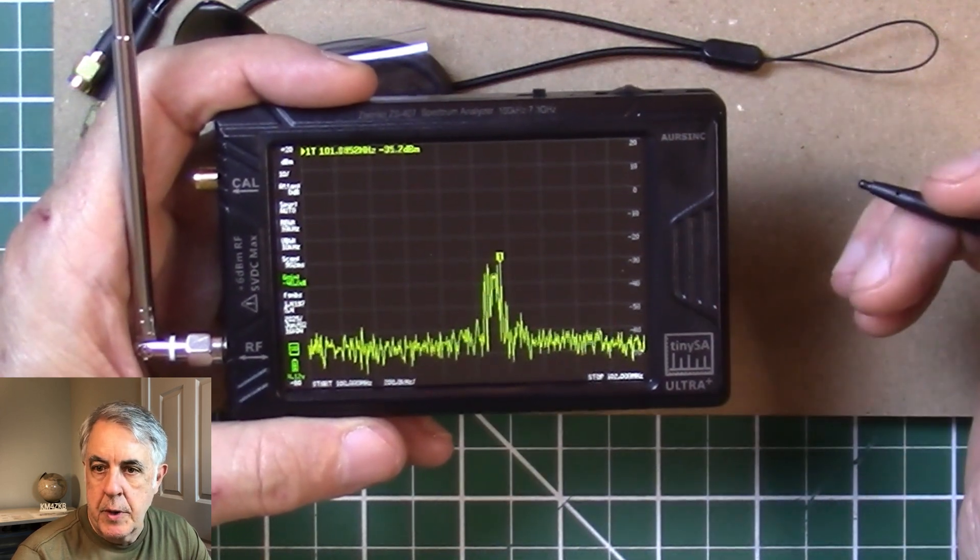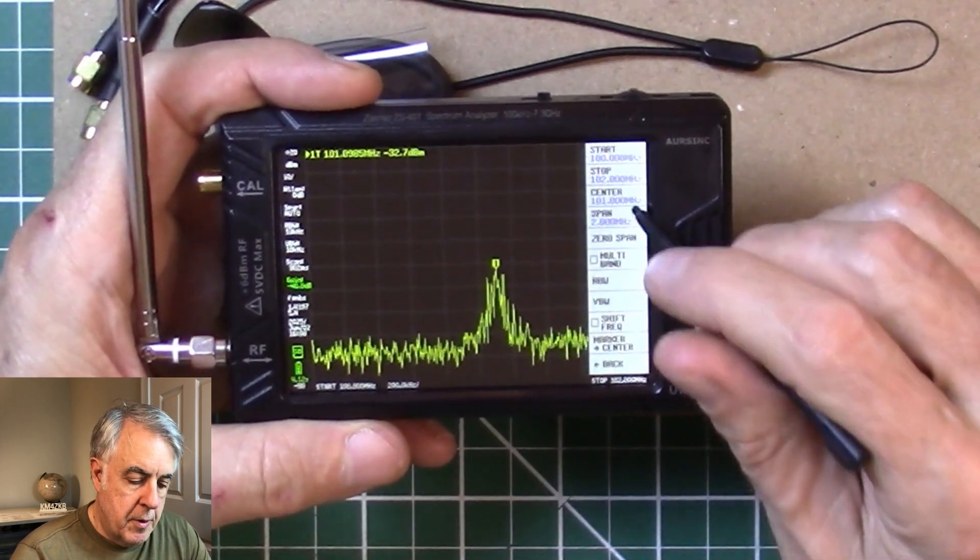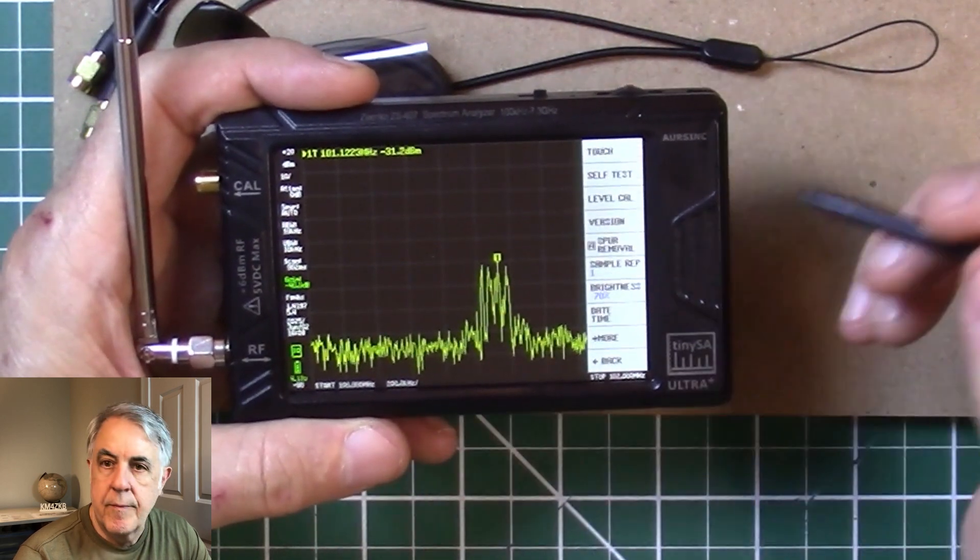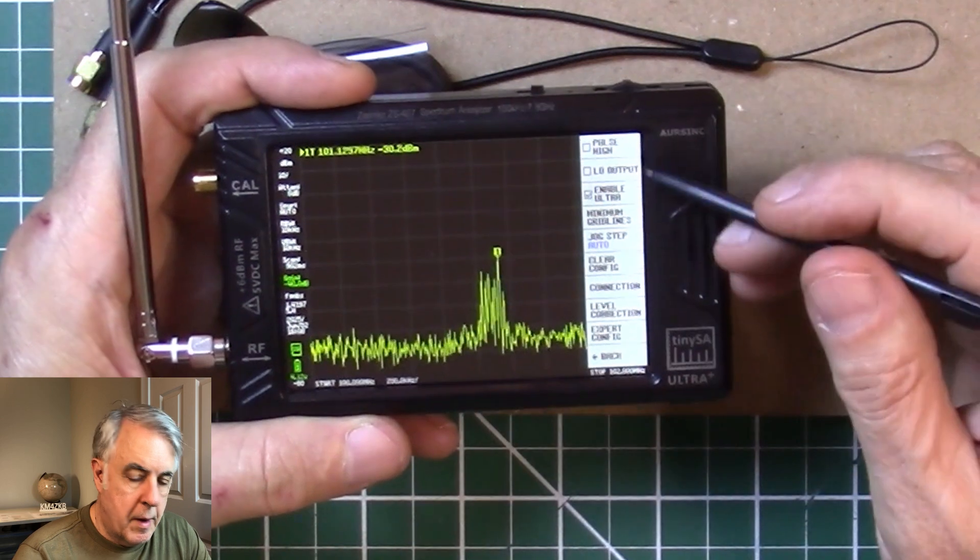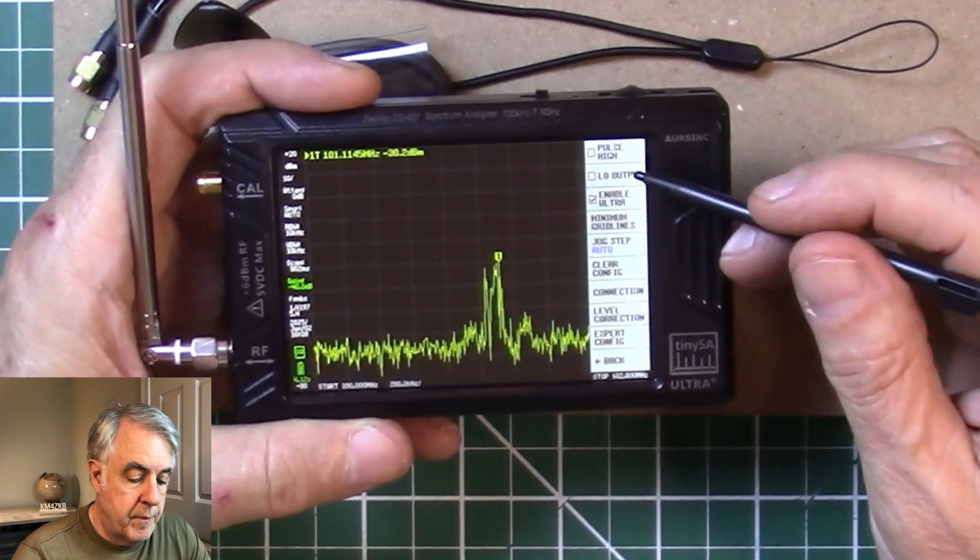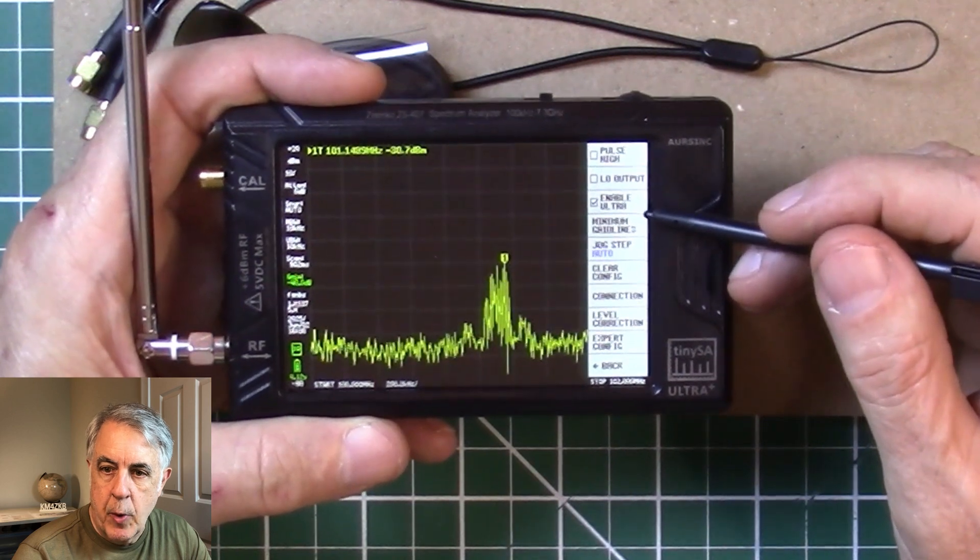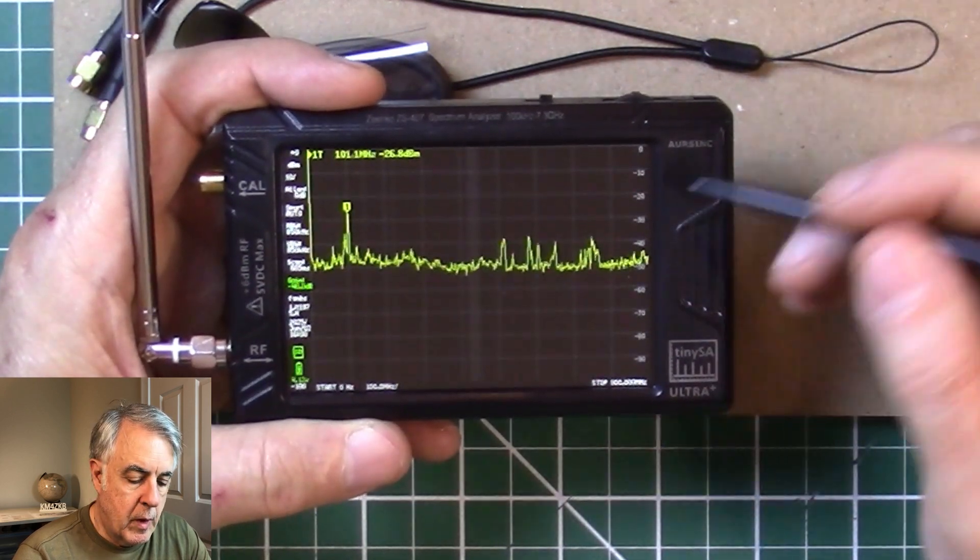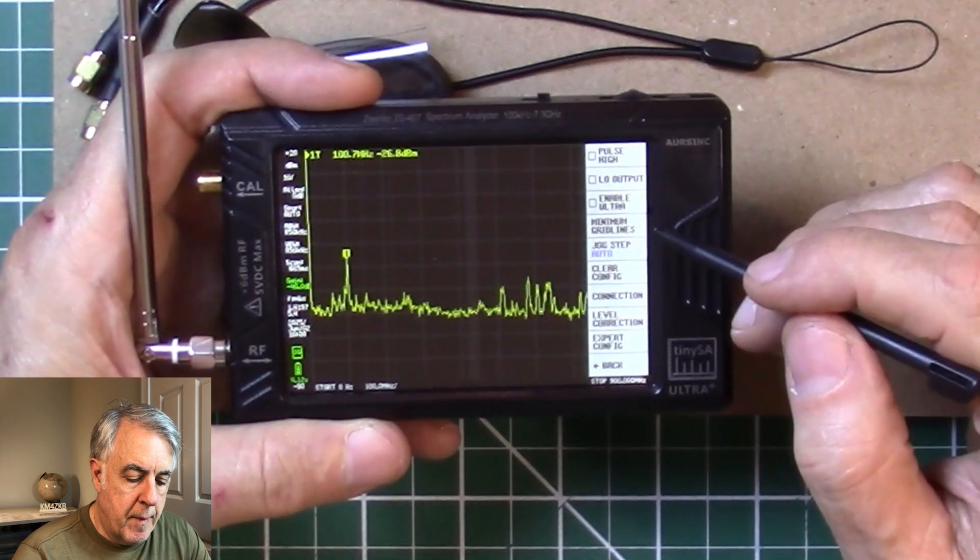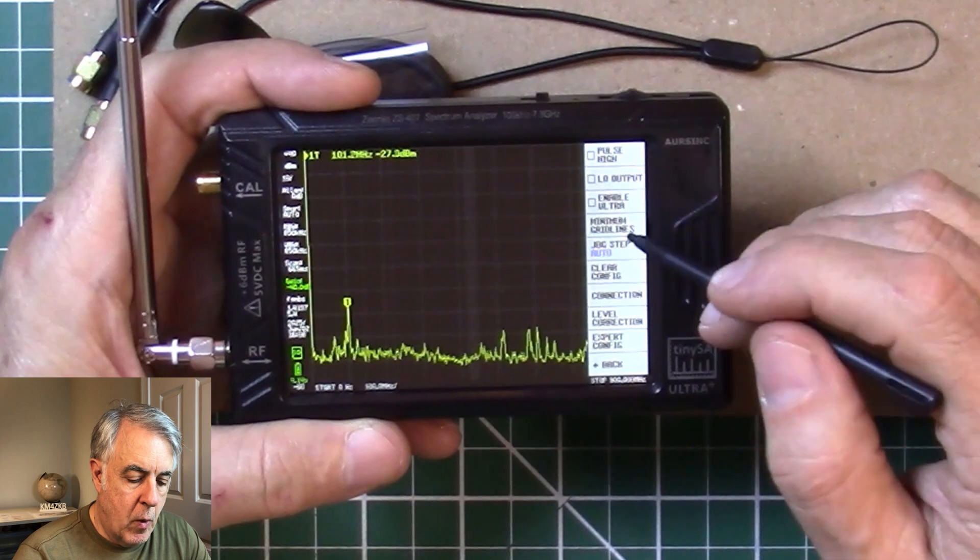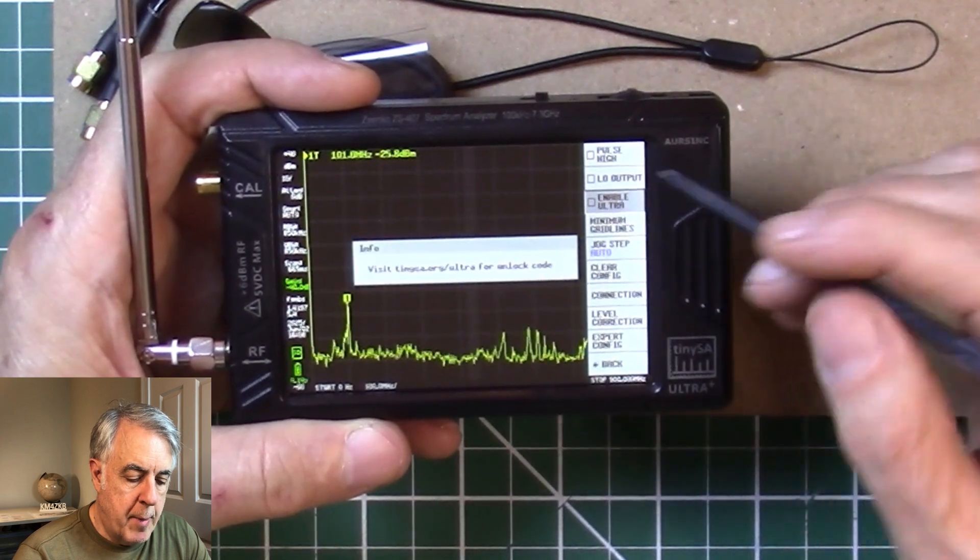In order to get the spectrum analyzer into ultra mode, you need to enter a code. It comes with ultra mode disabled. So if you click on the screen, go into config, and then go into more.